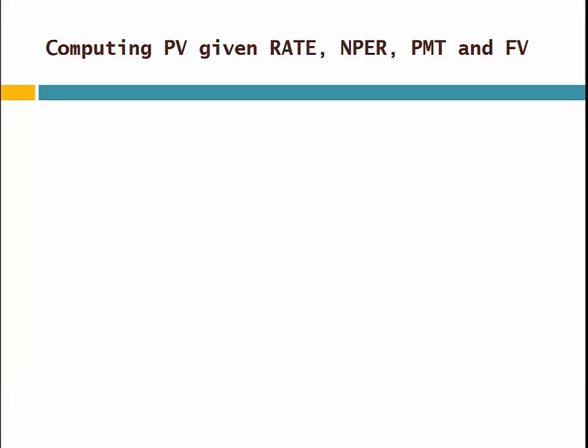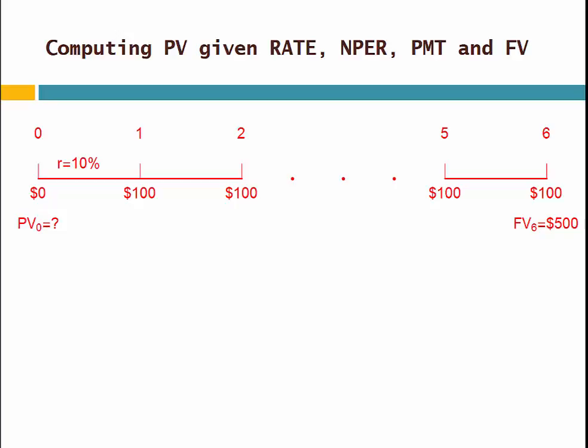Let's start with an example. In this example, we have to compute present value given rate, number of years, payment, and future value. To make this more intuitive: you are going to deposit $100 each year for the next 6 years, and at the end of 6 years, your parent is going to give you $500. So if these are the cash flows, how much is the present value of all these cash flows?